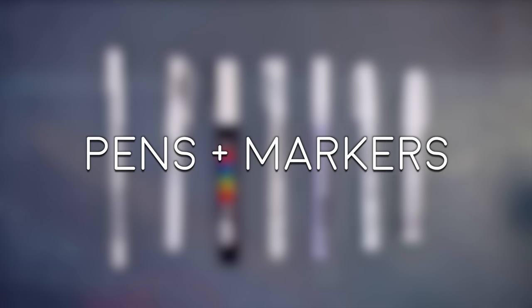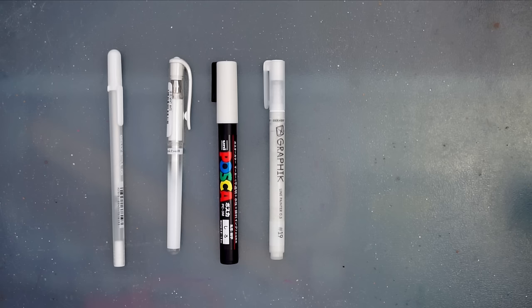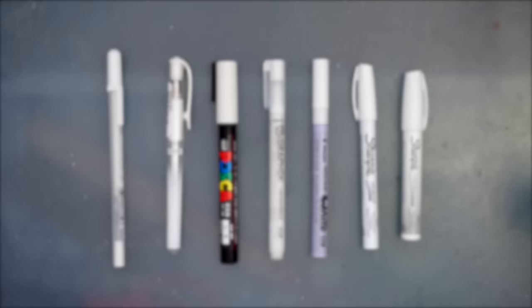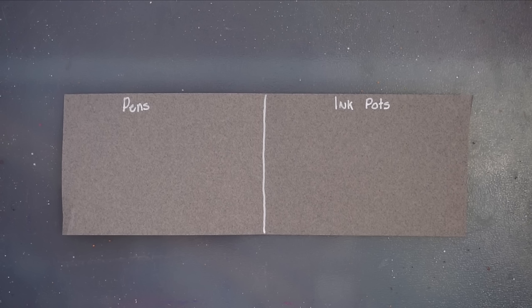Those are all the white inks I have in pot form, but now let's go into the pens and markers. First up is the Sakura Jelly Roll, next the Uniball Signo, the Posca Marker, the Derwent Graphic Pen, the Pilot Supercolor Pen, an oil-based Sharpie Paint Marker, and a water-based Sharpie Paint Marker.